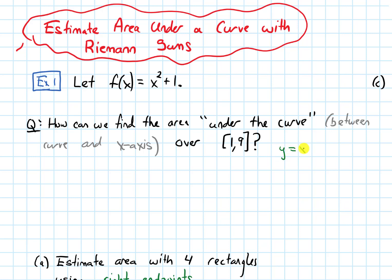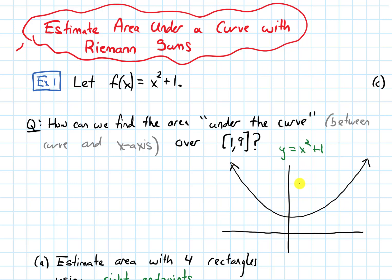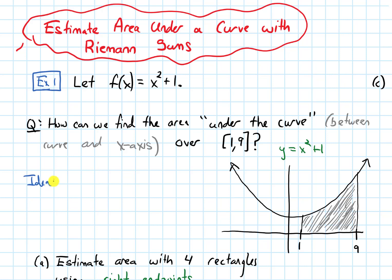I'll label my function y equals x squared plus 1 and draw some axes. I know this is an upward-facing parabola, and the plus 1 shifts it up one unit. I want the area between the curve and the x-axis over the interval from 1 to 9, so I'll label 1 and 9 on the x-axis and draw some vertical lines. Our idea is to first approximate this area using shapes I know how to find the area of, like rectangles.